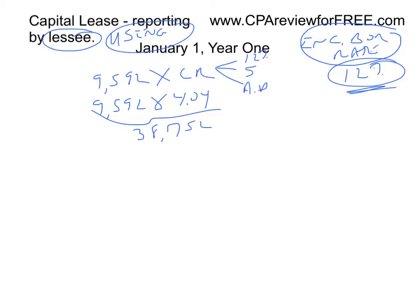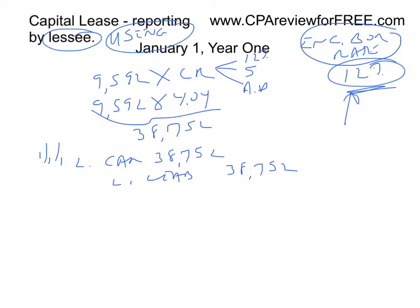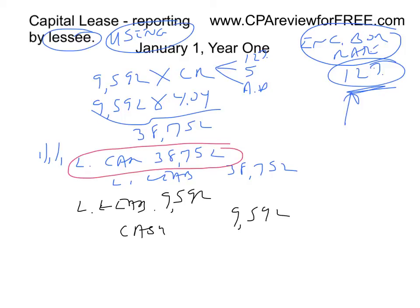The lessee is effectively paying $38,752 for the car; the remainder of the payments is interest. On January 1, Year 1, debit Lease Car for $38,752 and credit Lease Liability for $38,752. That differs from the lessor because a different interest rate is used. Since it's an annuity due, one more entry is required: debit Lease Liability $9,592 and credit Cash $9,592. The car is on the books at $38,752 and the liability after the first payment is $38,752 minus $9,592, equaling $29,160.